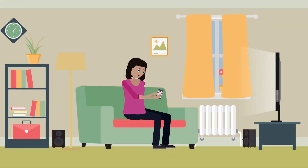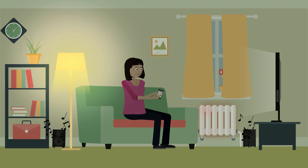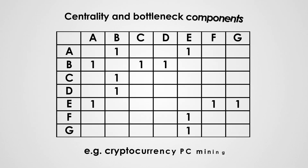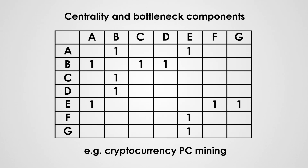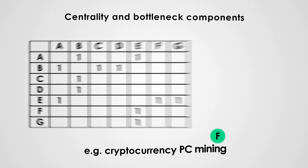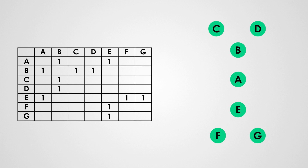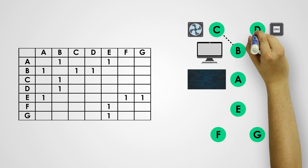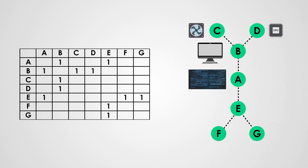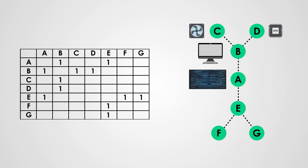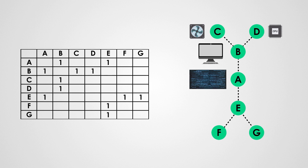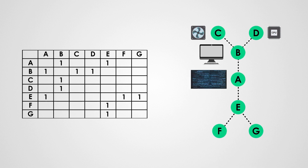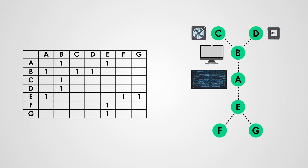Ecosystems are built to offer value propositions to customers. Technological components are building blocks of ecosystems. Graph theory principles add structure to patterns of complementarities within ecosystems. Applying network analysis can uncover technological components' centrality in ecosystems.